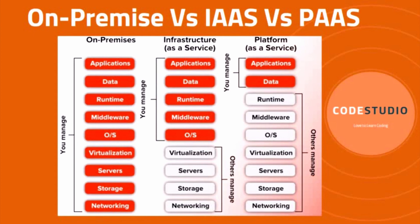We only need to deploy our code and application to the platform to run our application. The key features of PaaS include offering a platform with the best tools to develop or host applications in a similar environment. It also offers managerial security, server software, operating systems, and backup options. Examples of PaaS include Heroku and AWS Elastic Beanstalk.